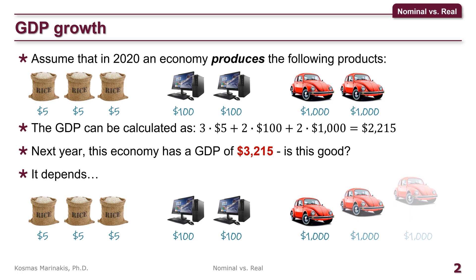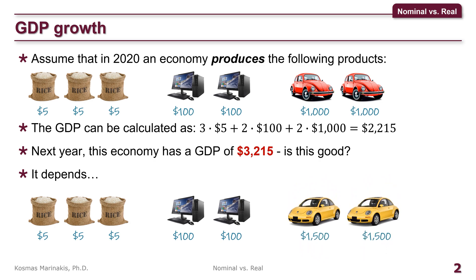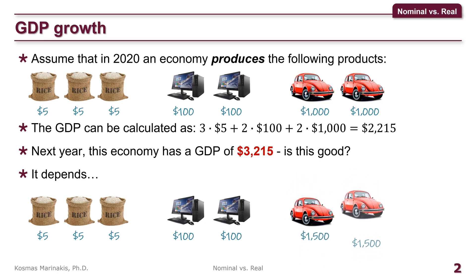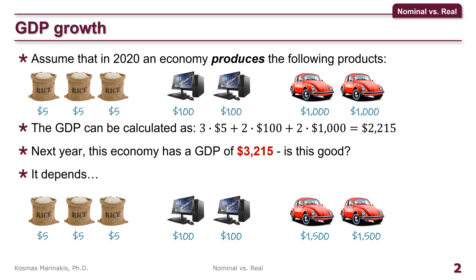Or maybe production may look like this. Still good — the economy has now produced better cars that the market values at a higher price because they are better. But what if production looks like this? That is, it has produced the same amount of goods, of the same quality, but it has just increased the price of the old cars because of inflation. There's definitely a problem here. The real wealth of this economy remained the same, yet GDP indicates that there was significant growth. What gives?